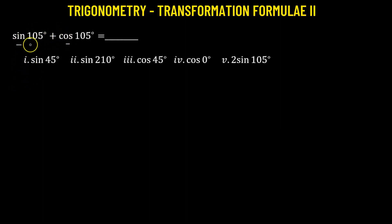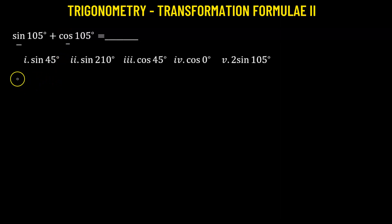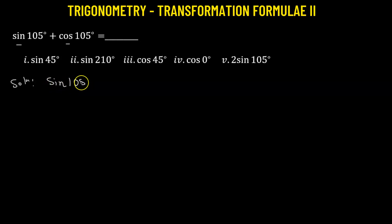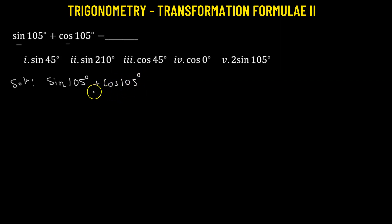That means if we start with the sine function, we will convert the cosine function to its corresponding sine function. So here we have sine 105 degrees added to cosine 105 degrees. Let's try to convert cosine to sine.